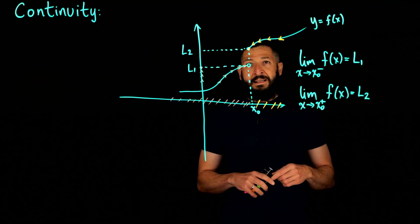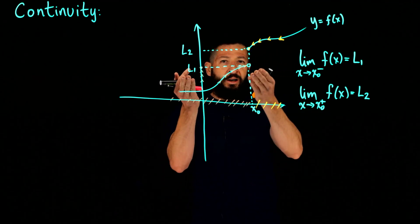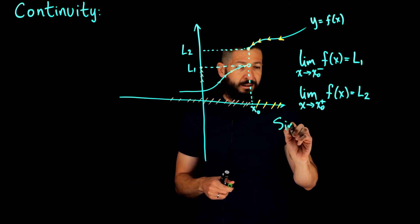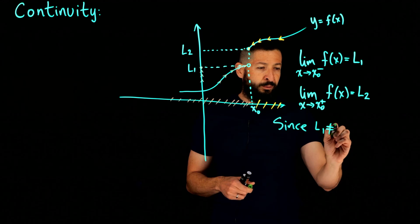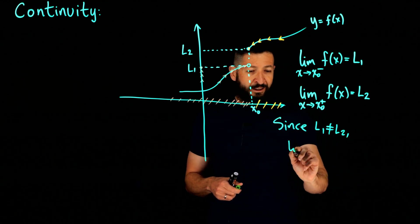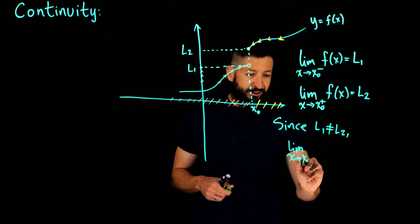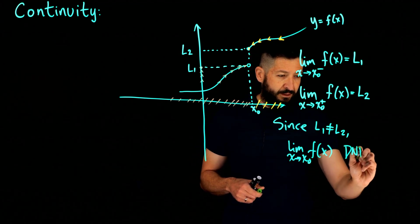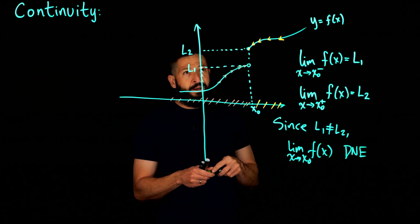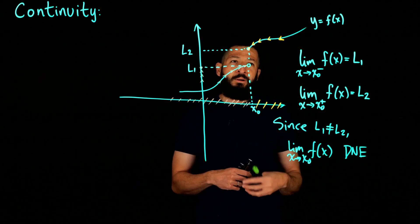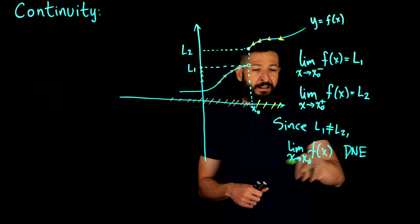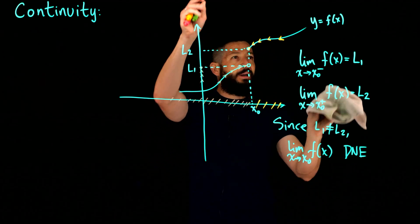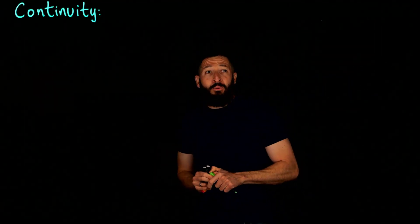Before I erase, let me ask you: what would the limit be? Do we prefer L1 or L2? Well, since L1 is not equal to L2, we say that the limit as X approaches X_naught of f(x) does not exist. There's no limit because you can't say you prefer one side over the other — you just say the limit does not exist. We're going to use this to talk about continuity.